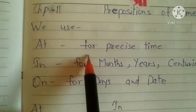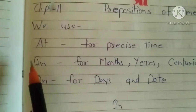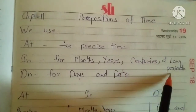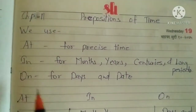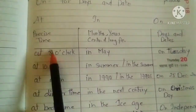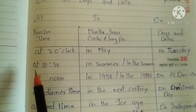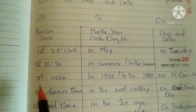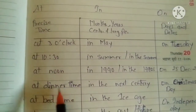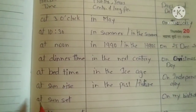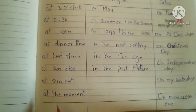We use 'at' for precise time. We use 'in' for months, years, centuries, and long periods. We use 'on' for days and dates. For 'at': at 3 o'clock, at 10:30, at 1 o'clock, at any time, at noon, at dinner time, at bedtime, at sunrise, at sunset, at the moment.